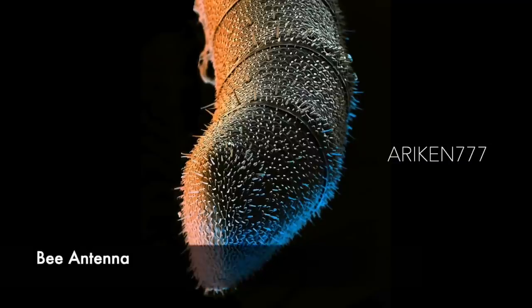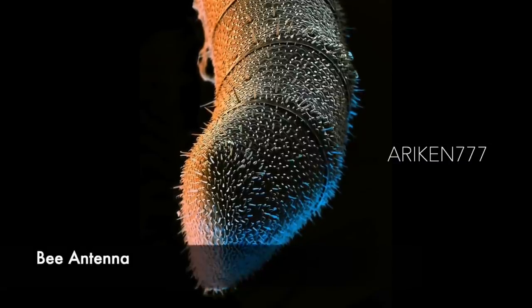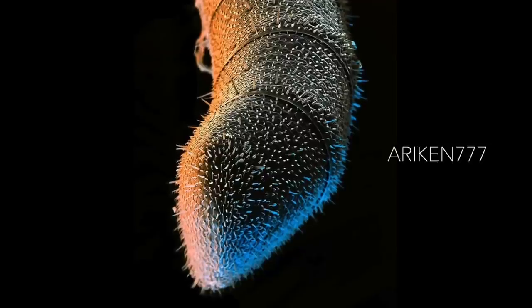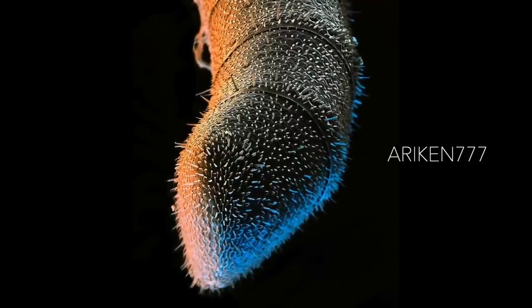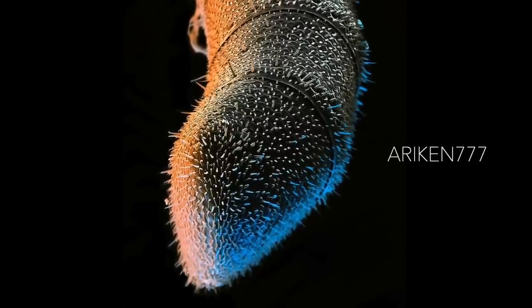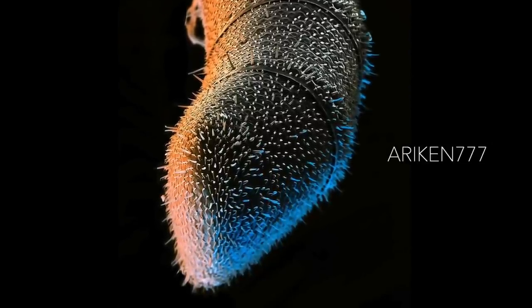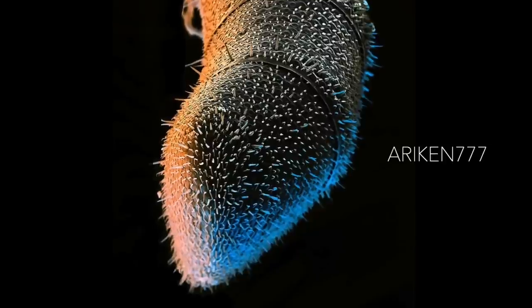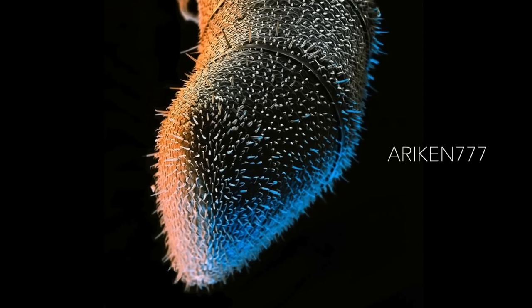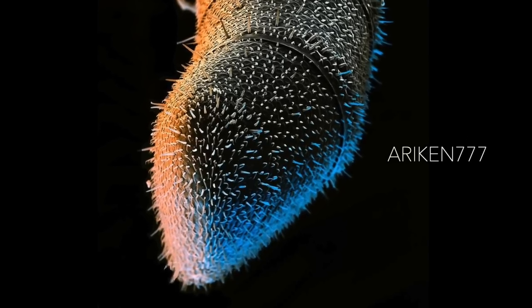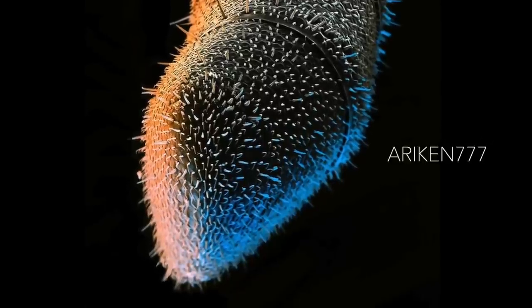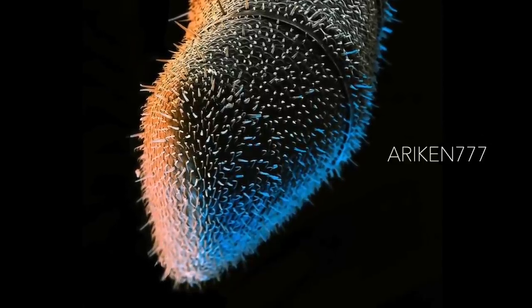A bee's antenna is packed with thousands of sensory cells. Bees use their antenna to smell, taste, and hear, as well as to detect changes in temperature, wind, and humidity. These sense organs not only help the bee steer through the outside world, they also help it navigate the social world of the hive. Bees communicate in large part through chemical pheromones, with different odors signaling everything from an alarm to an individual bee's status.